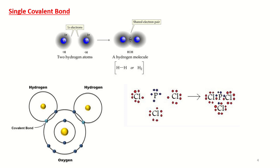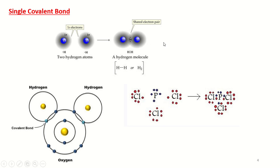The combination of two hydrogen atoms gives a single covalent bond. Hydrogen has one electron in its outer shell. When two hydrogen atoms combine, they share their electrons. This sharing forms a single covalent bond because only one electron from each hydrogen atom is shared between the two atoms.